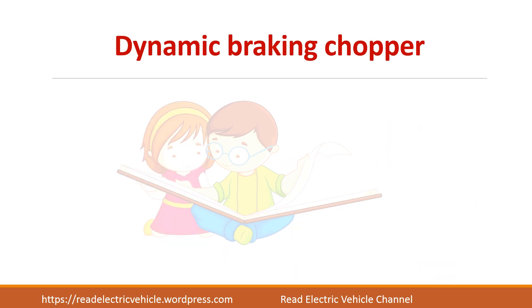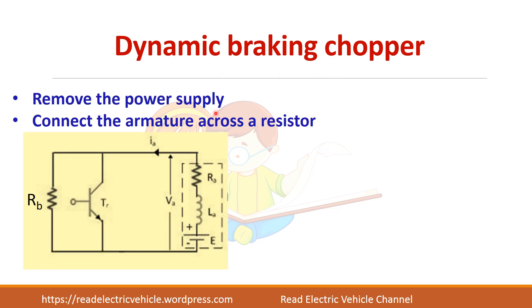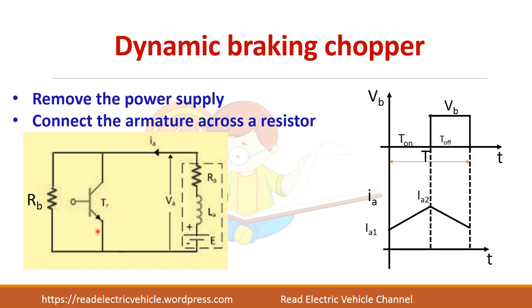So far we have seen about the regenerative braking chopper. Now we will see about dynamic braking chopper. In dynamic braking, we remove the power supply and connect a resistor across the terminals. The same regenerative braking chopper circuit is used except that the source is removed and a braking resistor RB is connected across the terminals. When the switch is on it is a short so voltage is zero, and when it is open the current passes through the braking resistor RB, giving a voltage drop of VB.